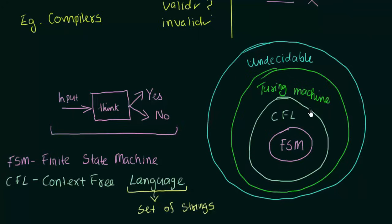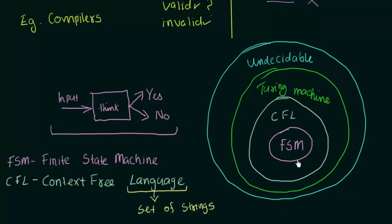In the next layer we have the Turing Machine. A Turing Machine is a machine that can perform high-level computations and calculations. It was designed by Alan Turing in 1940 and is much more powerful compared to Context Free Languages and Finite State Machines. In the next layer we have what is labeled as Undecidable — these are the problems that cannot be solved mechanically, like the example we saw earlier. These layers are what we have to go through, and we will be starting with Finite State Machines in the next lectures. Thank you for watching.